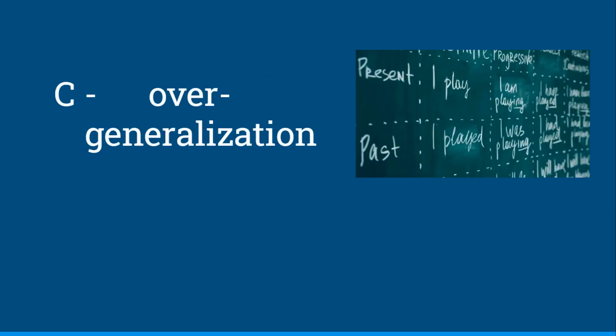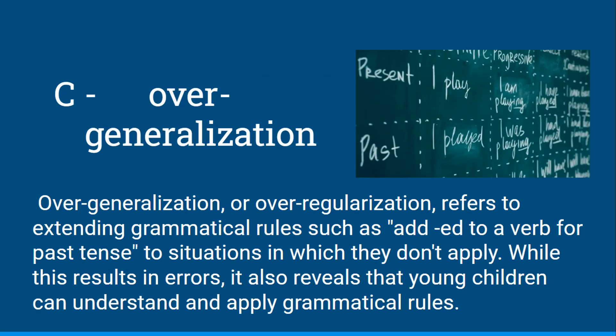And this would be C, overgeneralization. Overgeneralization, or overregularization, refers to extending grammatical rules — such as adding 'ed' to a verb for past tense — to situations in which they don't apply. While this results in errors, it also reveals that young children can understand and apply grammatical rules.